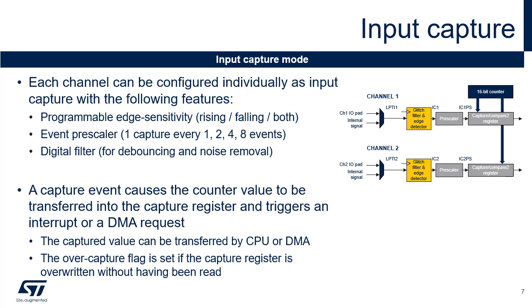Each channel can be individually configured as input capture with various signal conditioning options. The edge sensitivity is programmable and can be rising edge, falling edge, or both. An event prescaler captures one event every 2, 4, or 8 events as programmed. Spurious transitions due to noise or bounces can be removed using a programmable digital filter. Once the capture trigger is issued, the timer's counter value is transferred into the capture register and an interrupt or DMA request can be issued. If a new capture occurs before the previous one has been read, the capture register is overwritten and an overcapture flag is set.